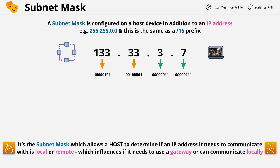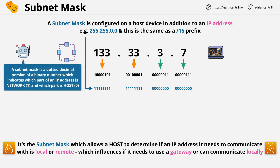To use a subnet mask you first have to convert it into binary. So 255.255.0.0 converts as follows: the first octet is all ones, the second octet is all ones, the third and fourth octets are all zeros. The slash 16 prefix is just shorthand — it's the number of ones in the subnet mask starting from the left. So slash 16 simply means 16 ones, which is the same as 255.255.0.0 in binary. When you have the subnet mask in binary, anything with a one represents the network and anything with a zero represents the host component. By overlaying a subnet mask and an IP address both in binary, it becomes really easy to tell which part is which.